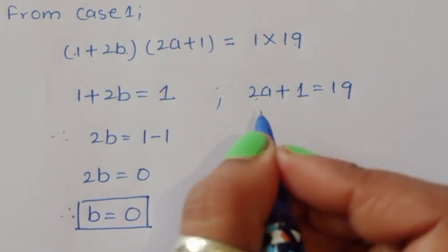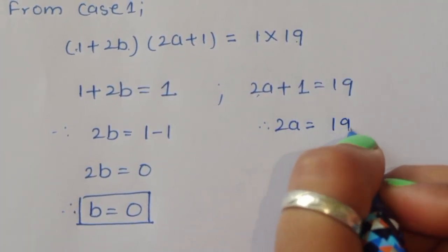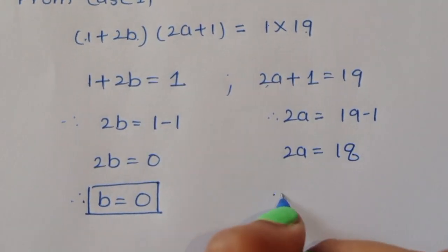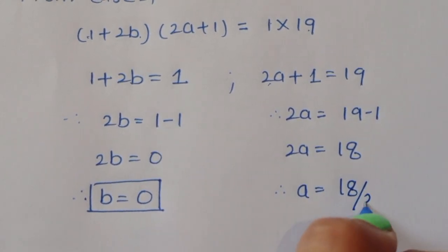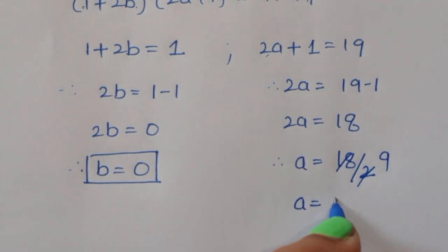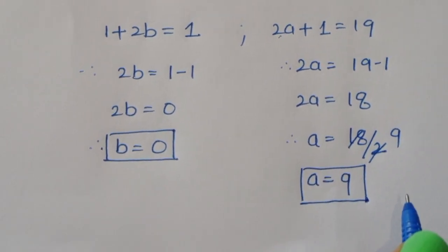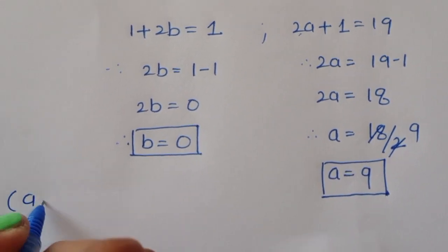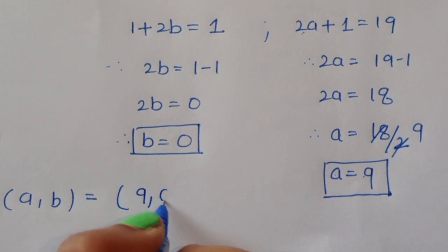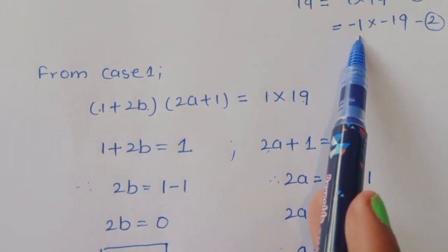Now from 2a plus 1 equals 19, we get 2a equals 18, therefore a equals 9. So from Case 1 we got a equals 9 and b equals 0.